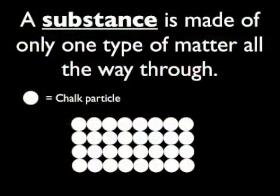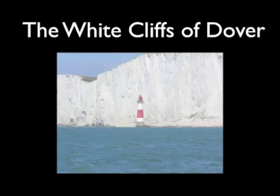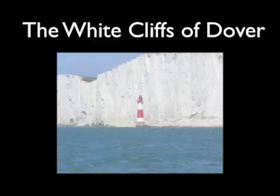So, a substance is made of only one type of matter all the way through. That's why chalk is a good example of a substance — it's only composed of chalk particles. I can make a connection to this. In Ireland, there's a place called the White Cliffs of Dover, and it's cliffs of pure chalk. In the picture, I can see that the entire cliff is all white, and it's all chalk — just one substance.